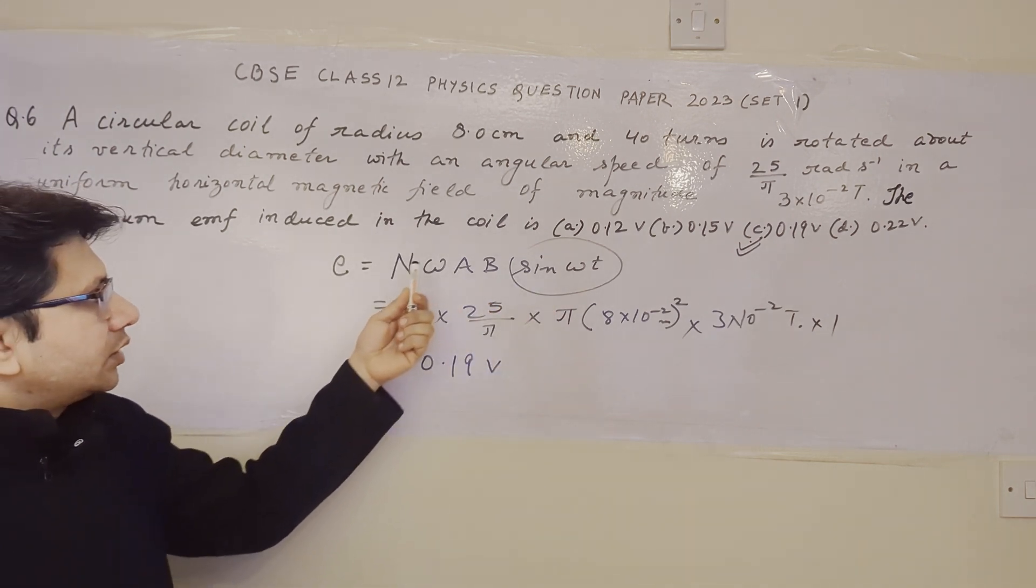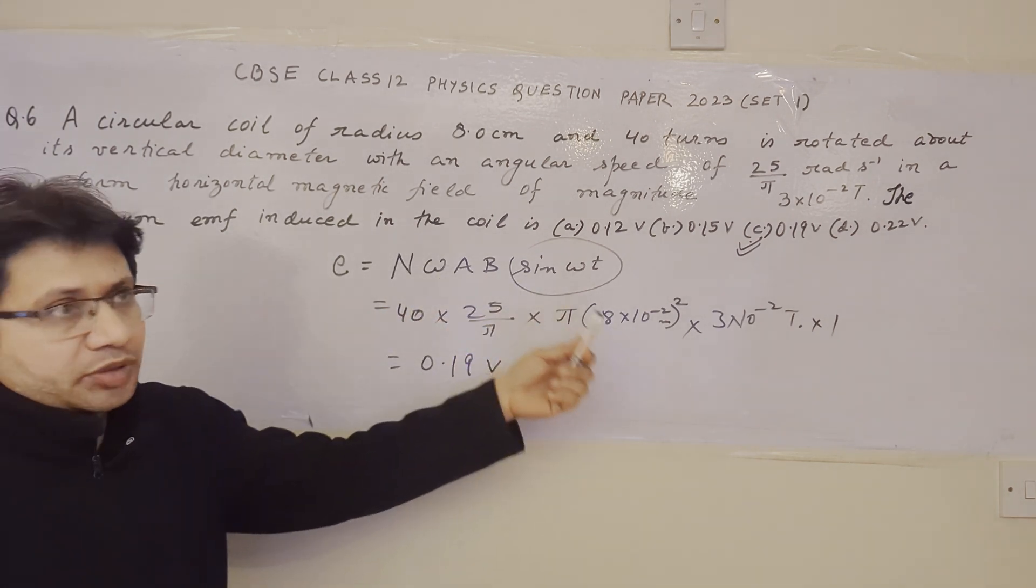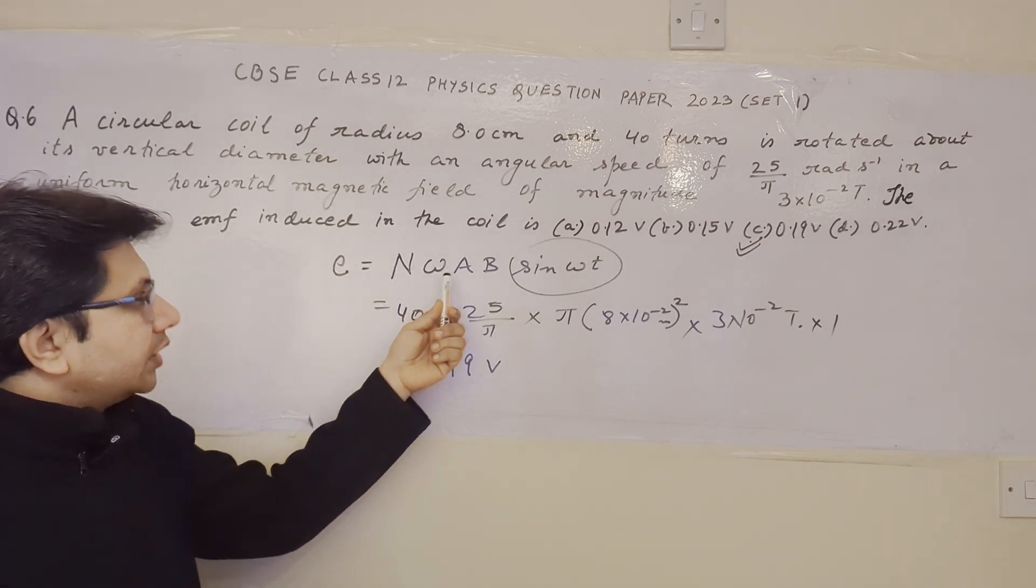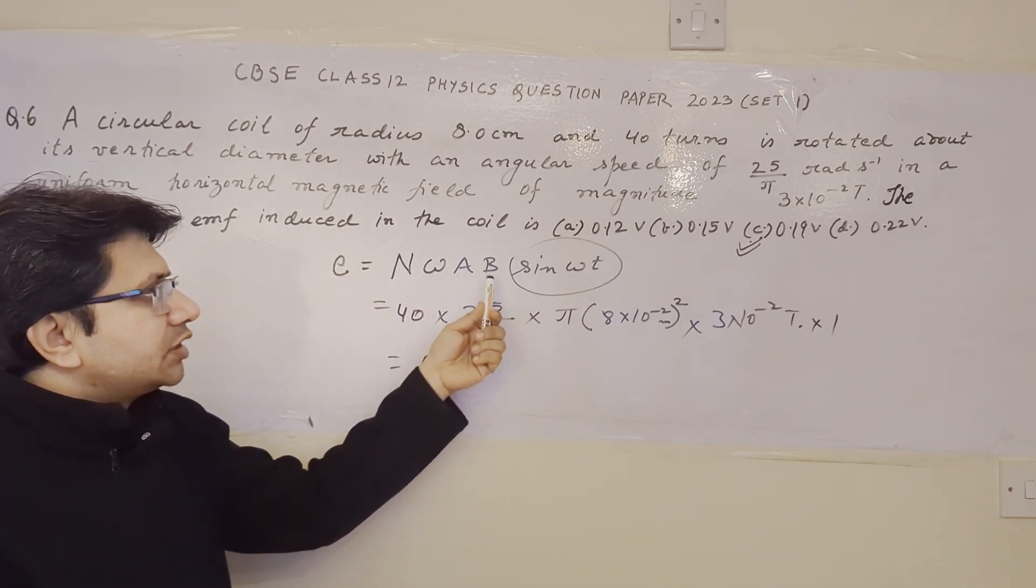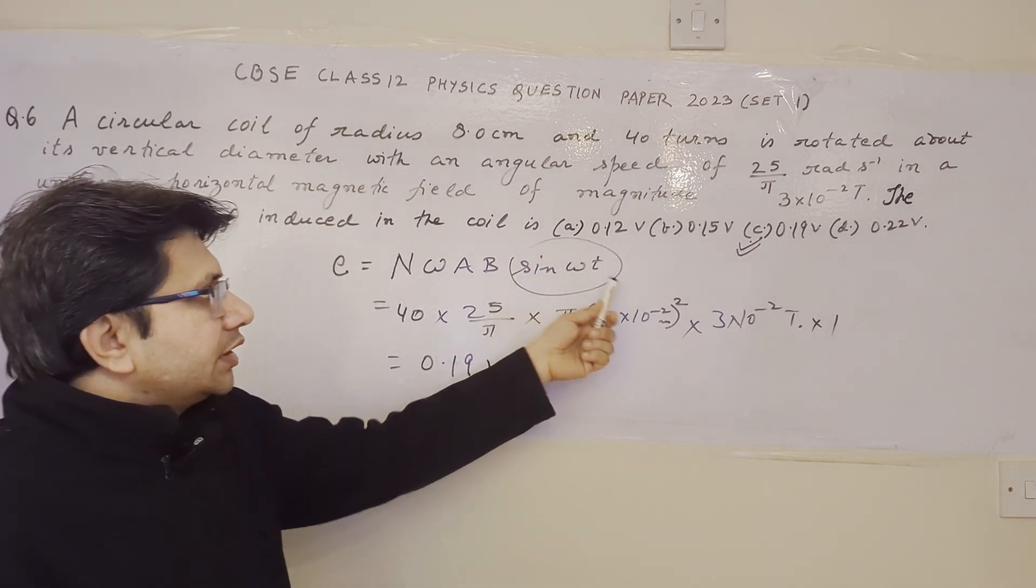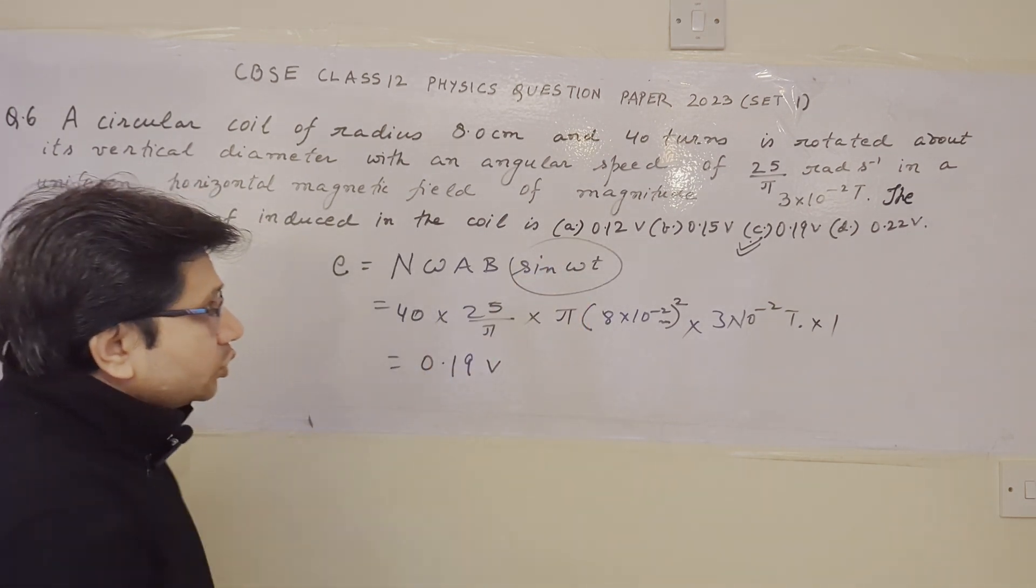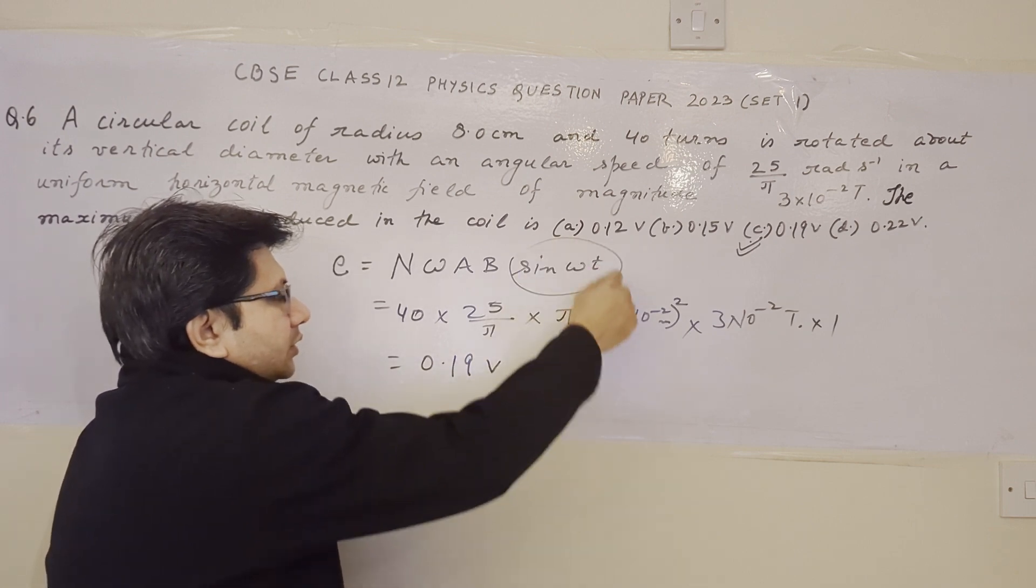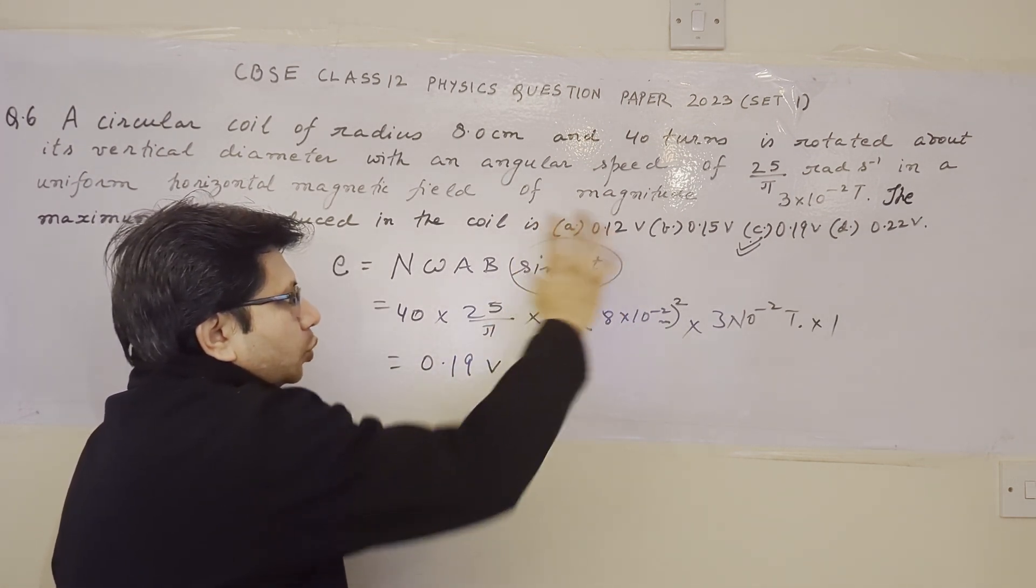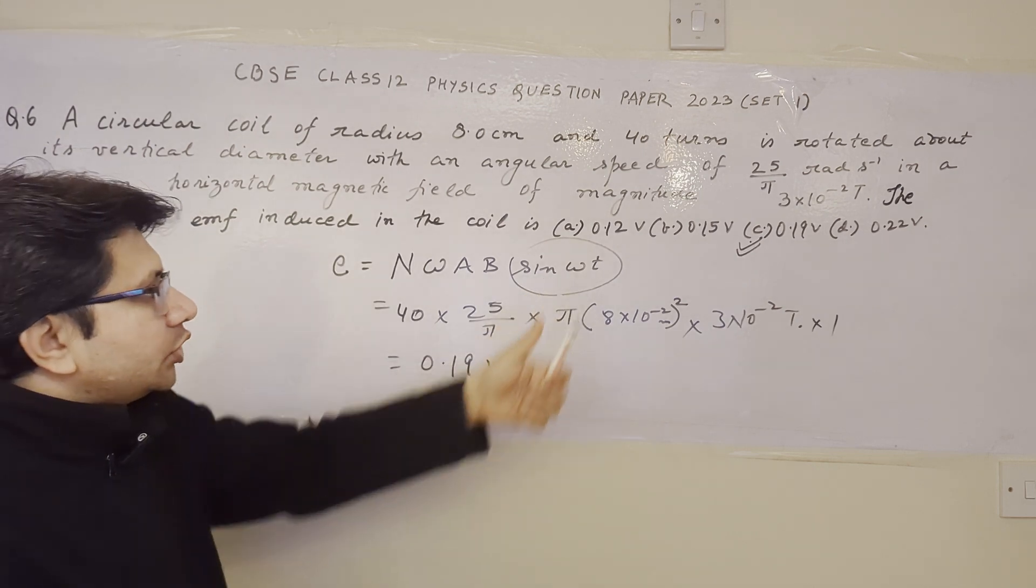EMF E equals to N omega A B sin omega T, where N is the number of turns, omega is the angular speed, A is the area of the coil, B is the magnetic field and sin omega T depends upon T as well as omega. Now this value is maximum when omega T is 90 degrees. But we can say that the maximum value की क्या होगी? 1 होगी. यह value हम यह 1 put कर देंगे.